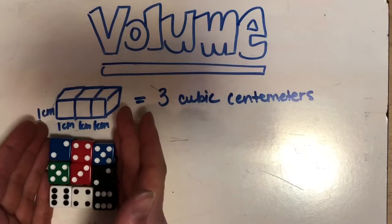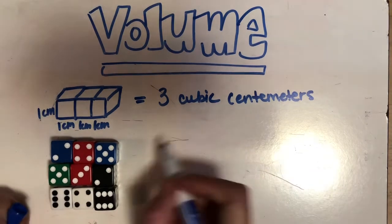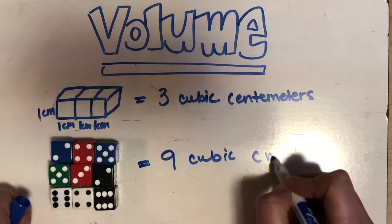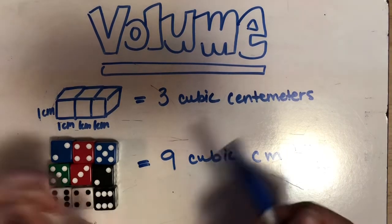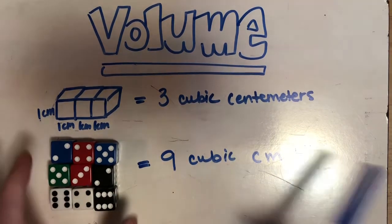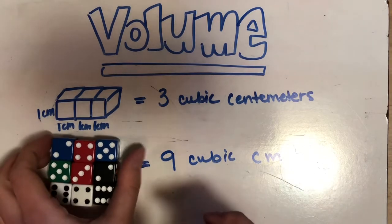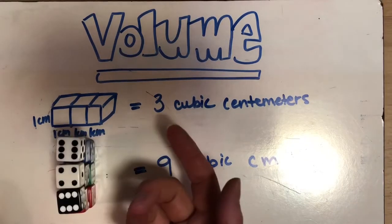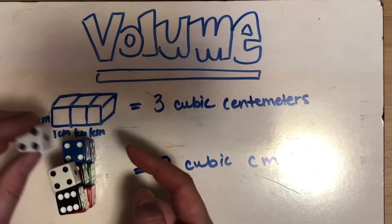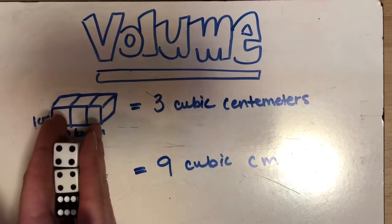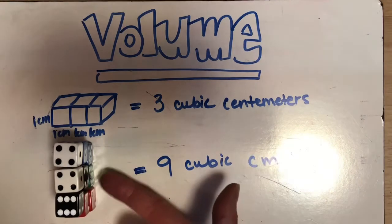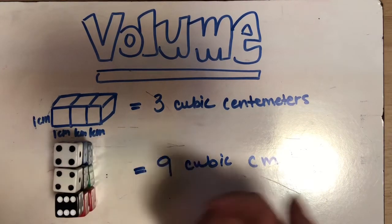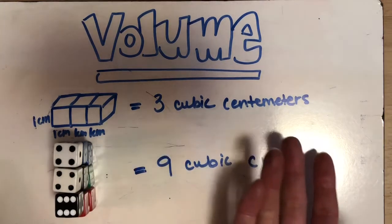What if I have something like this? This is gonna equal nine cubic centimeters. Alright, CM for abbreviation. So I could also take this and I could put it on its side. Now from this angle, luckily you can see the ones below it, and we can see that I still have nine cubic centimeters. I just turned it on its side.